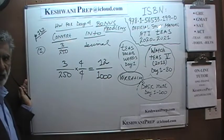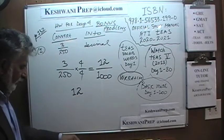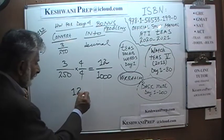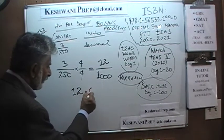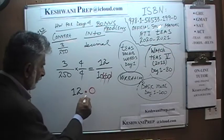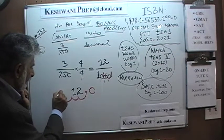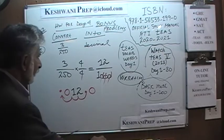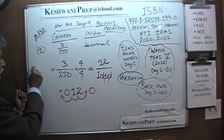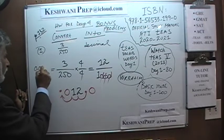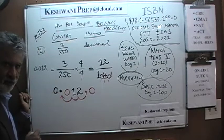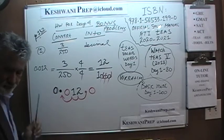Now converting 12 over 1000 into decimal is very easy. Here is our 12 — where is the decimal point? It is not written but it is there, right after the 12. We pick it up and move it to the left three places, because there are three zeros. It ends up giving us 0.012. You have to put a leading zero here — it is just a convention, a tradition, to make the decimal more noticeable. The answer is 0.012.